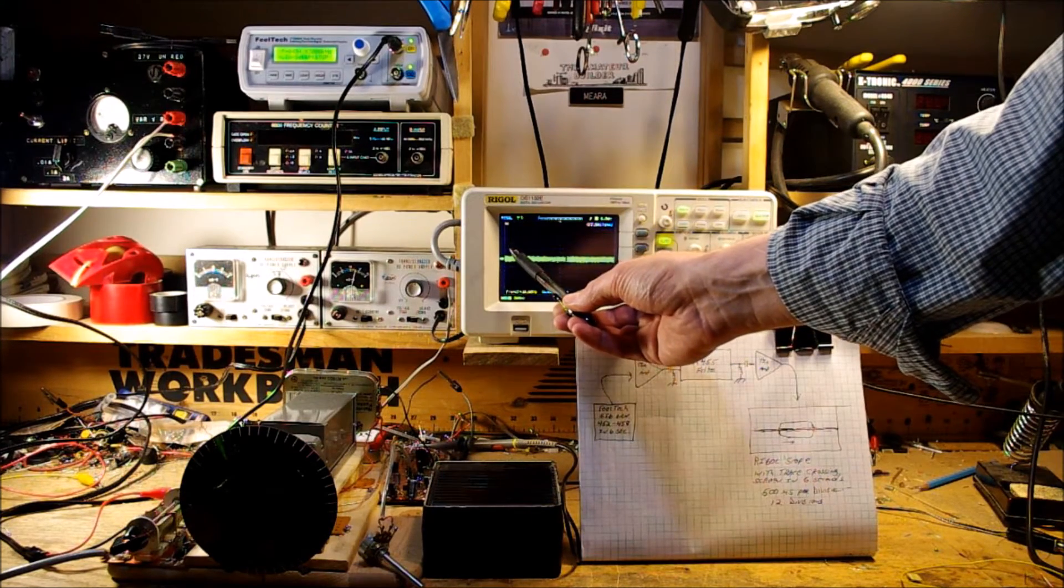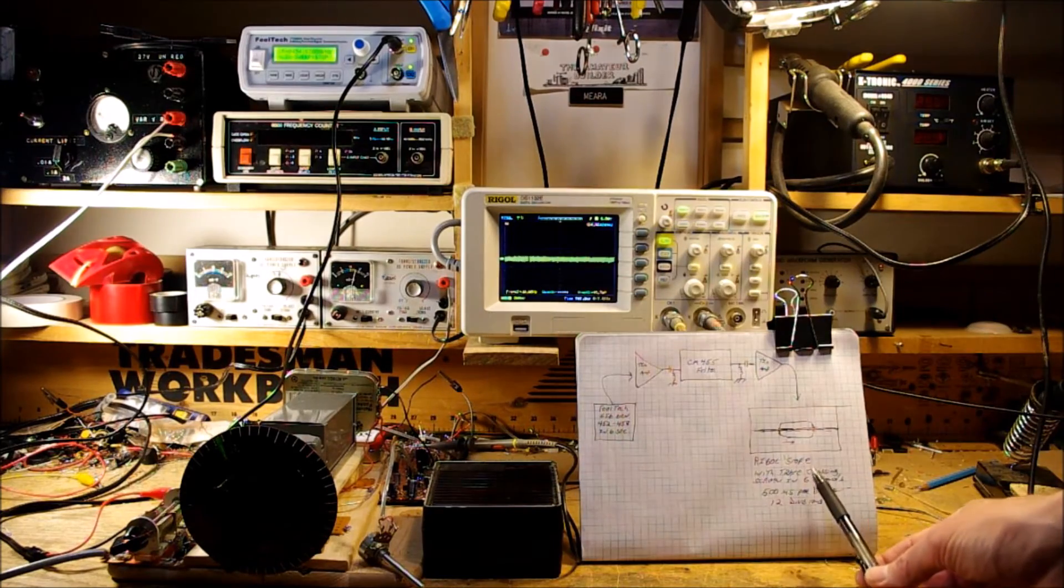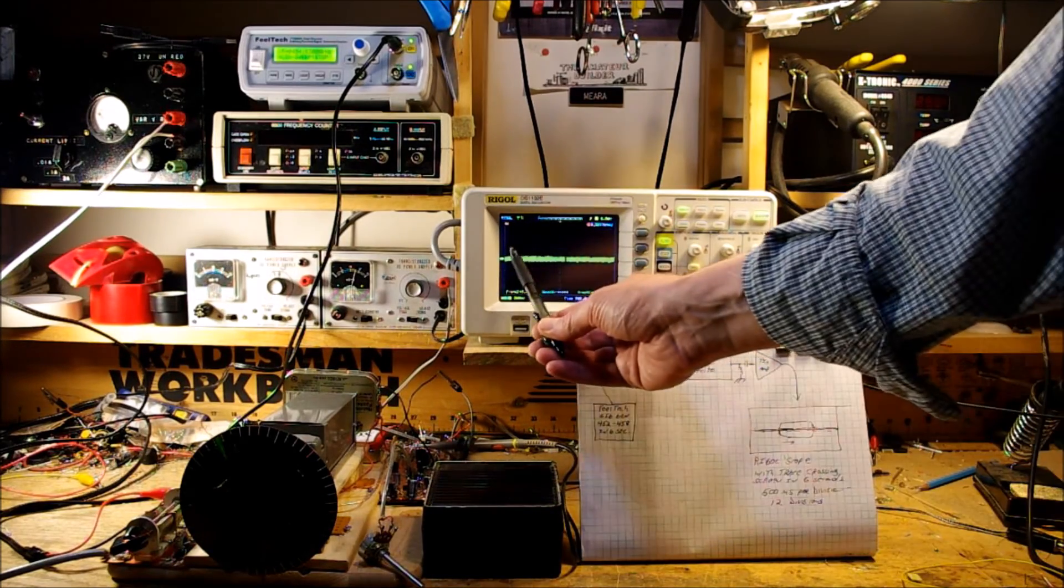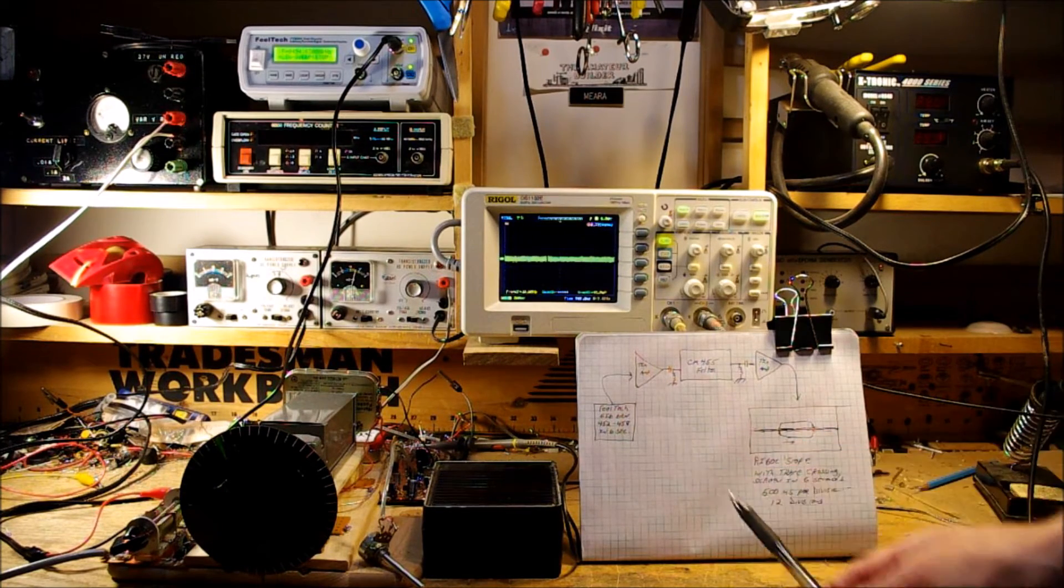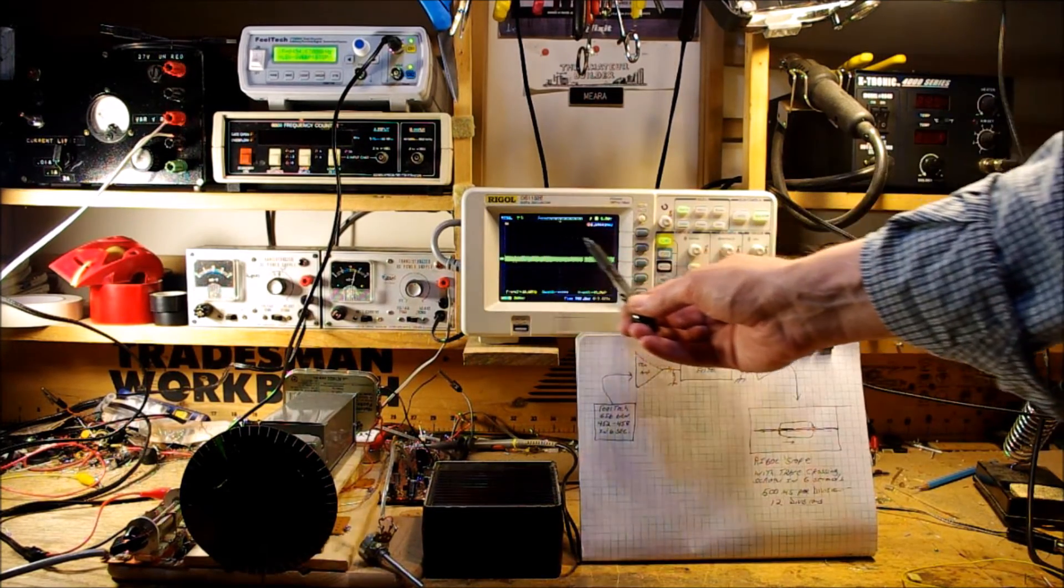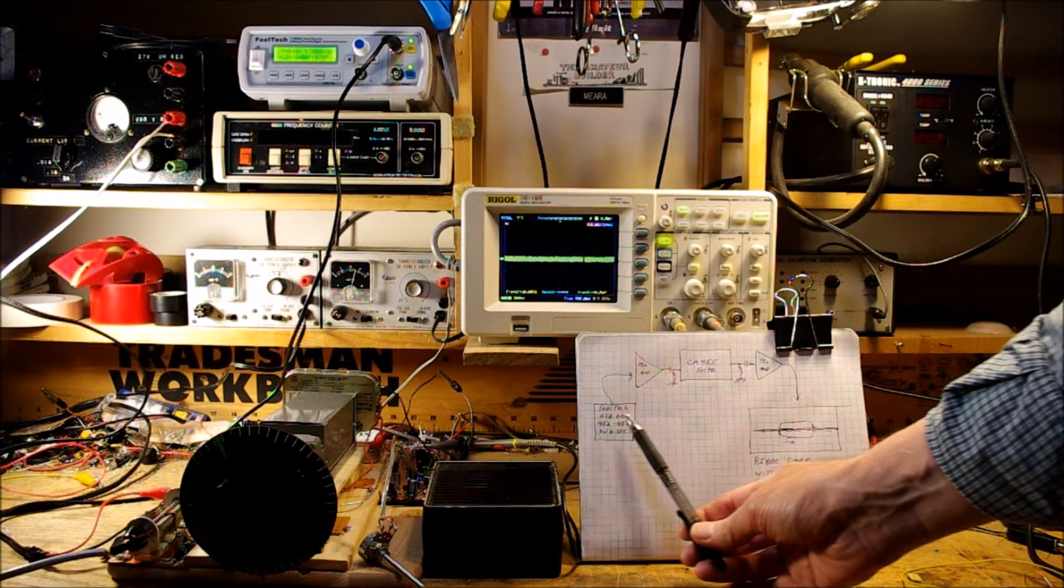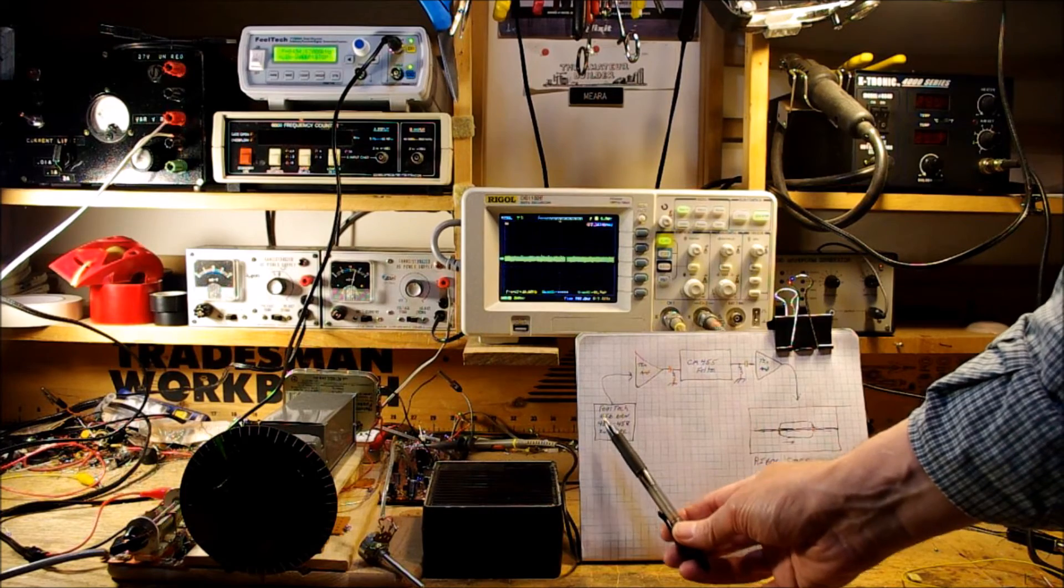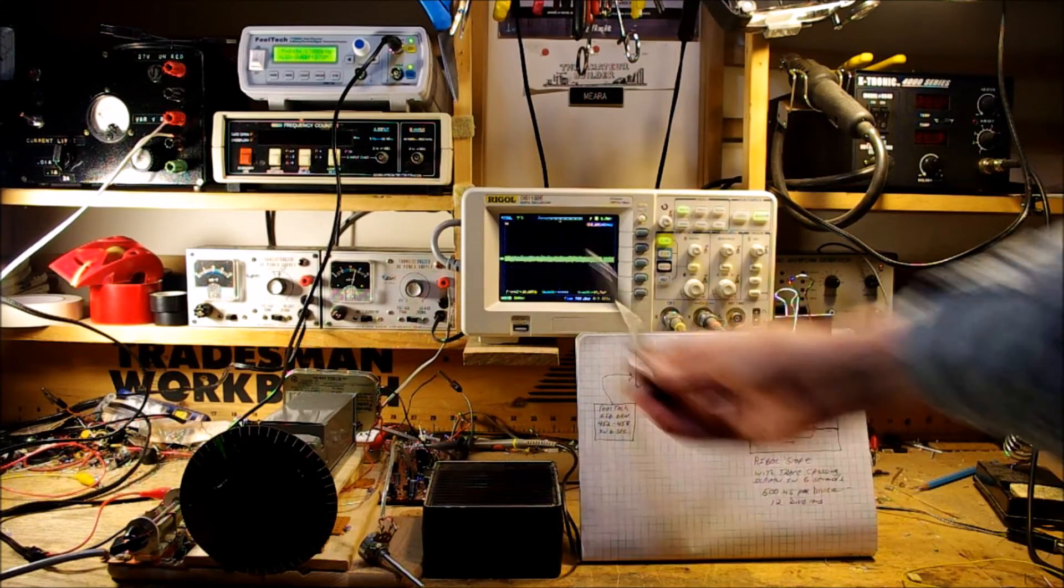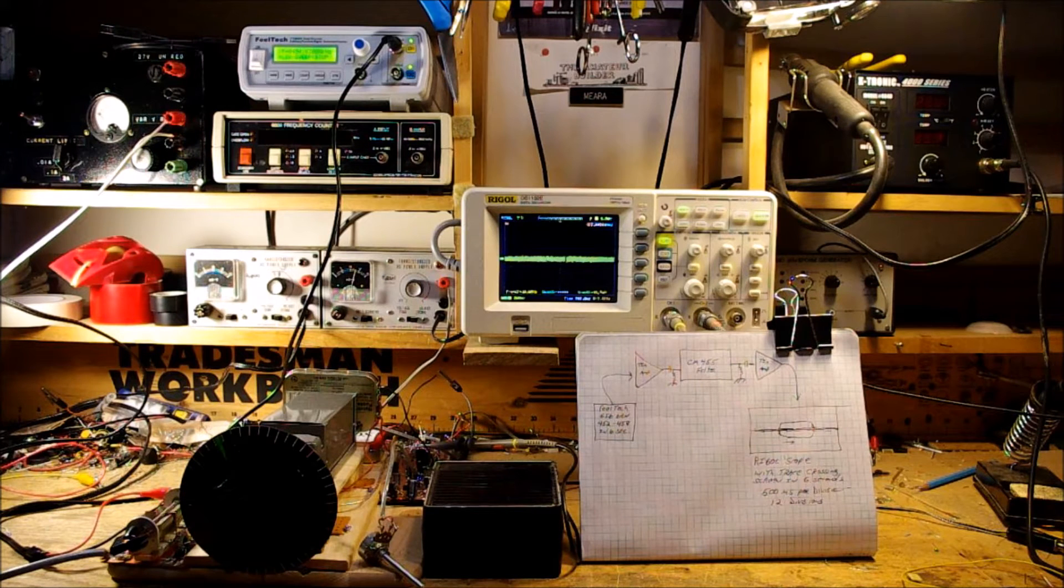The oscilloscope is set to scan the entire screen in six seconds. There are 12 divisions, so it's set at 500 milliseconds per division and that has the trace move across in six seconds. So the number here that we're using is six - six kilohertz of scanning around the center frequency of the filter. It scans it in six seconds and the oscilloscope trace goes across the front panel in six seconds.